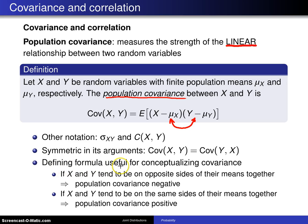This defining formula is useful for conceptualizing the population covariance. Let's say X and Y tend to be more often on opposite sides of their means together. Then the population covariance is negative. In other words, if X tends to be above its mean, this will be positive, while Y is below its mean, so this term will be negative, and the expected value of their product will tend to be negative.